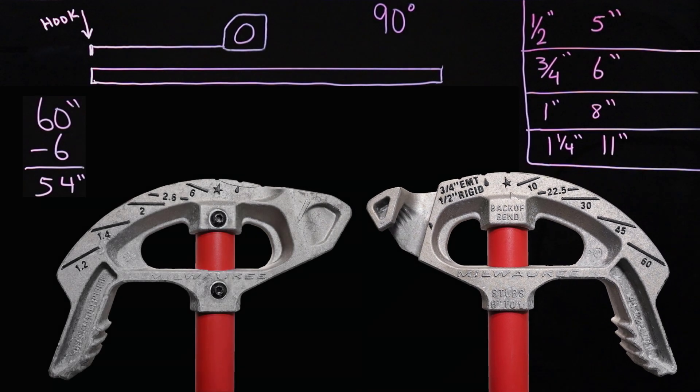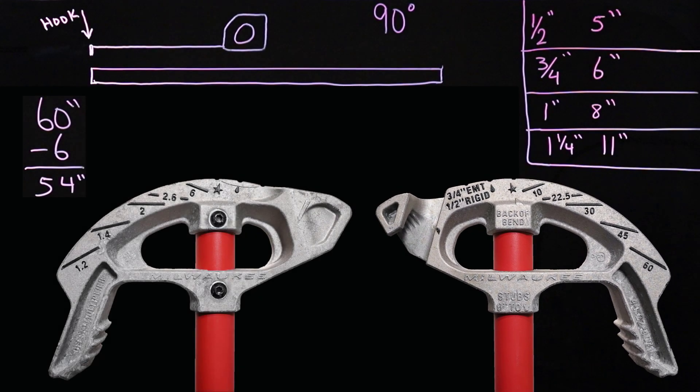But the orientation of the hook on both the bender and the tape measure, same orientation for a straight through bend. Remember to deduct that six inches for three-quarter.